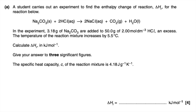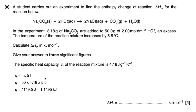Part A is a calorimetry question. The first thing we've got to do is use the Q = mcΔT equation to get the energy released by the reaction. So Q = mcΔT — m is 50 because we've got 50 grams of hydrochloric acid, multiplied by 4.18 (the specific heat capacity), multiplied by the temperature increase of 5.5 degrees. That comes out at 1149.5 joules.